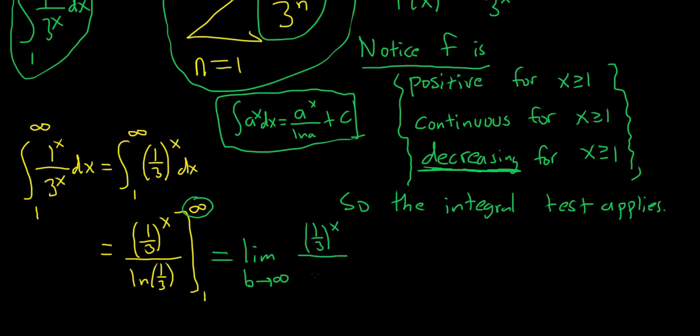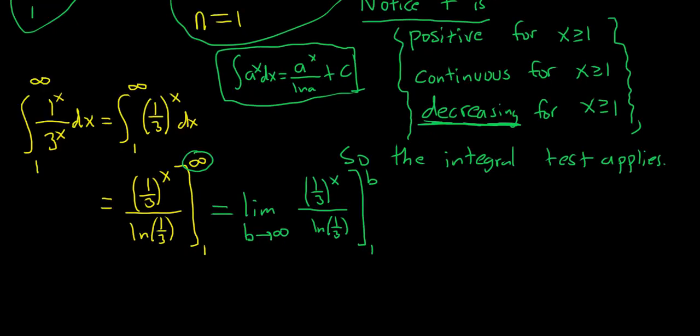So we have one third to the x, ln one third, and we're going from 1 to b. Okay, so so far so good. Now we plug in the b first. So this is equal to the limit as b approaches infinity. I'm going to leave this 1 over ln one third on the outside like this. And so we'll plug in the b. So we have one third to the b. Then you subtract and then you plug in the 1. So one third to the one. Beautiful stuff.